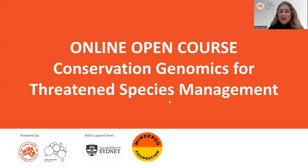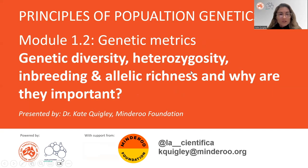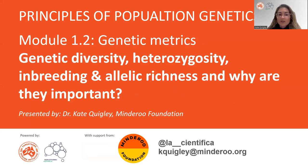Hello, everybody, and welcome again to our online open course as part of the Threatened Species Initiative, Conservation Genomics for Threatened Species Management. Today I'll be going over the principles of population genetics, in particular different genetic metrics including genetic diversity, heterozygosity, inbreeding, and richness, and why they're important. My name is Dr. Kate Quigley, and I'm joining you from Minderoo Foundation today.